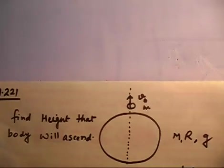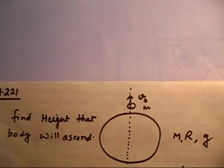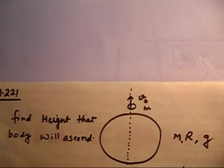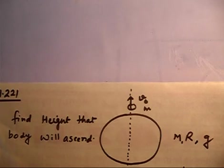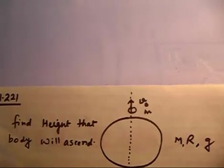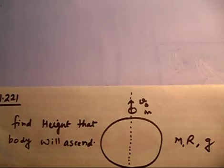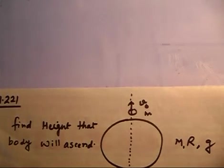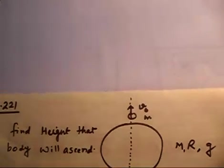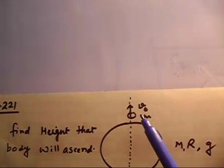This is problem number 2.21. I will read the question and you listen first, then try to understand what the question says. At the pole of Earth, a body is given a velocity v0 directed vertically upward. This object has been given velocity v0 at the pole of Earth.